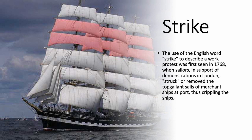A bit of etymology for you now — the origin of words. The word 'strike' comes from demonstrations that happened in 1768. Those demonstrations were by sailors in London in support of demonstrations happening in the city. What they did was they struck, or removed, the top gallant sails of merchant ships at port. Those pink sails you can see at the top were taken off — they were struck down, chopped off — therefore crippling the ships so they weren't able to go out to work and sail. That's where the word strike comes from.